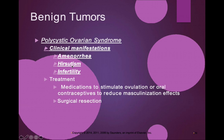Another manifestation is hirsutism — growth of hair in unwanted places such as the chin, chest, and sideburns. Infertility is also a manifestation. Treatment for PCOS includes medications to stimulate ovulation or oral contraceptives to try and reduce the masculinization — the unwanted hair growth can be an early indication of polycystic ovarian syndrome.